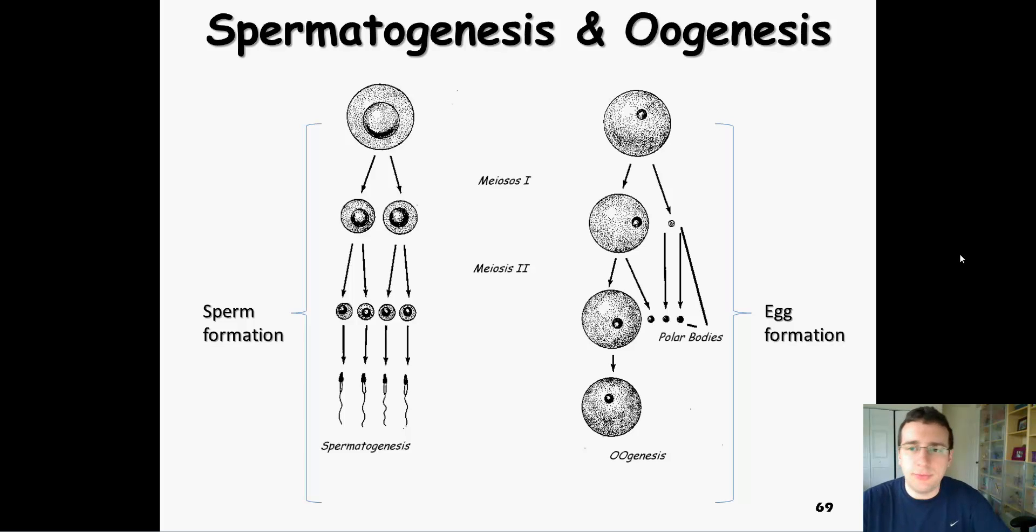In this video, we'll focus briefly on the differences between male and female gamete production. This process is called gametogenesis, or the process of creating gametes. The major differences between male and female are the actual speed, location, name, and there's also some different nuances on the actual process.